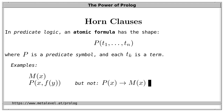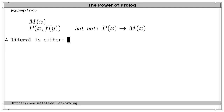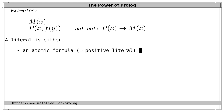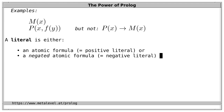But p of x implies m of x is not an atomic formula because it uses the binary connective. A literal is either an atomic formula, which is called a positive literal, or the negation of an atomic formula, which is called a negative literal. For example, not m of x is a negative literal and therefore a literal.